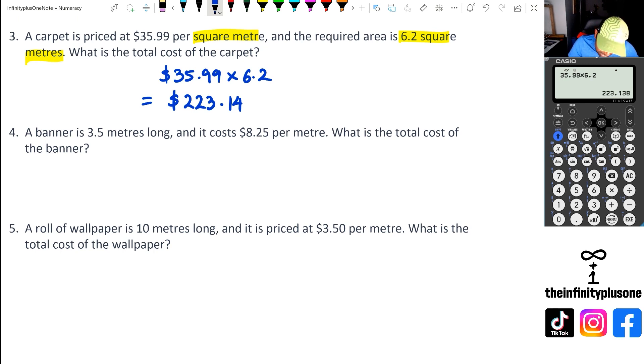Moving on to question 4. We've got $8.25 per meter multiplied by 3.5 meters because the banner is 3.5 meters long. So 8.25 times 3.5, and once again, we have that same problem. We need to round the number up in context. So this is going to be $28.88. And the reason is because the number after 7 is actually 5, and so therefore, we need to round the number up.